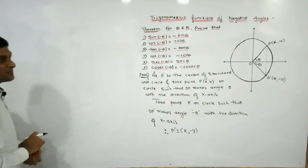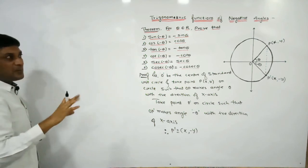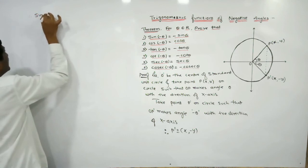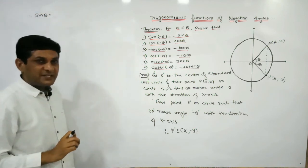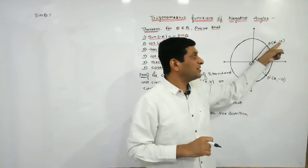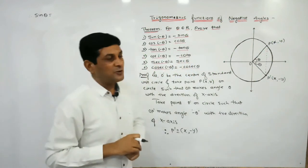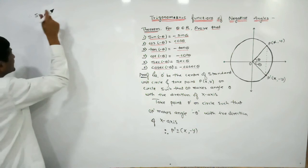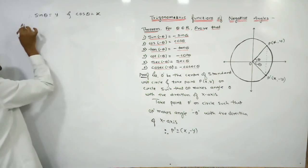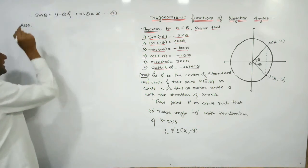We have established that for a point on the standard unit circle, the x-coordinate is the value of cos and the y-coordinate is the value of sine. When the angle is theta and the coordinates of P are (x, y): y is the value of sine theta and x is the value of cos theta. Let us denote these as equation 1 and equation 2.